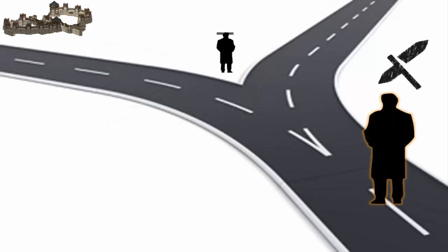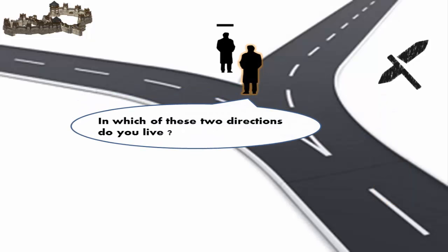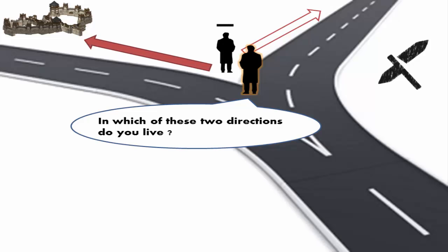Now consider the second possibility: the resident at the junction belongs to Liar Town. When you ask him, 'In which of these two directions do you live?' the actual answer is that the resident lives this way, but since he belongs to Liar Town and people from Liar Town always lie, he will answer you the wrong direction. But you have to choose the same direction that he answered.